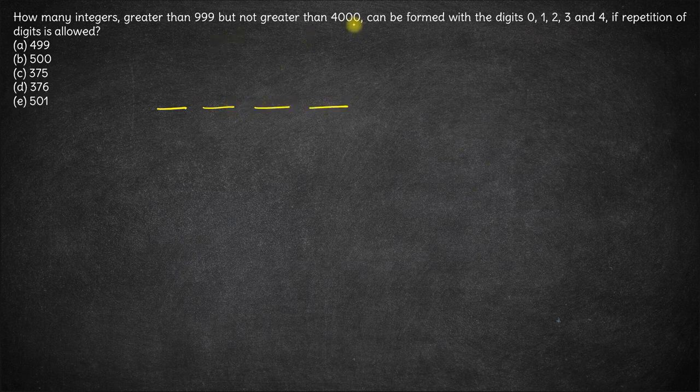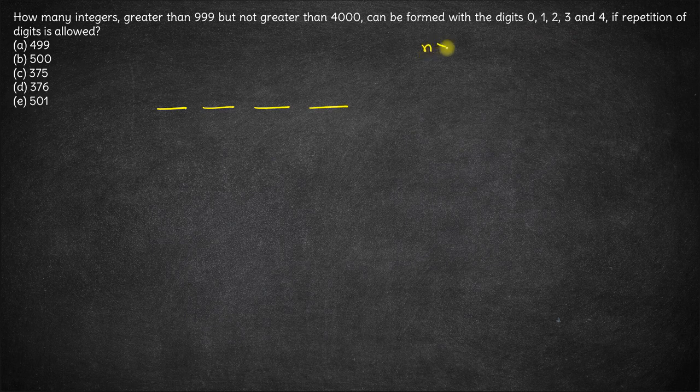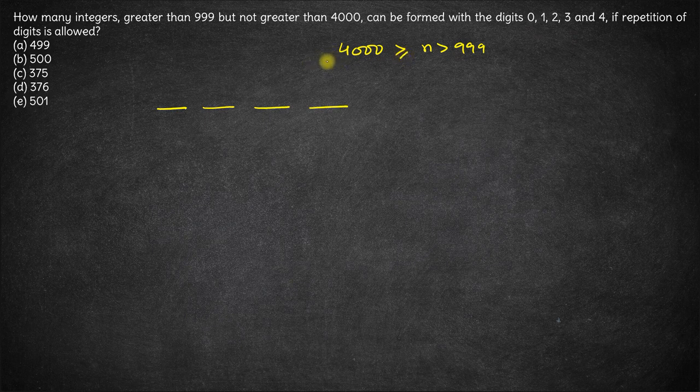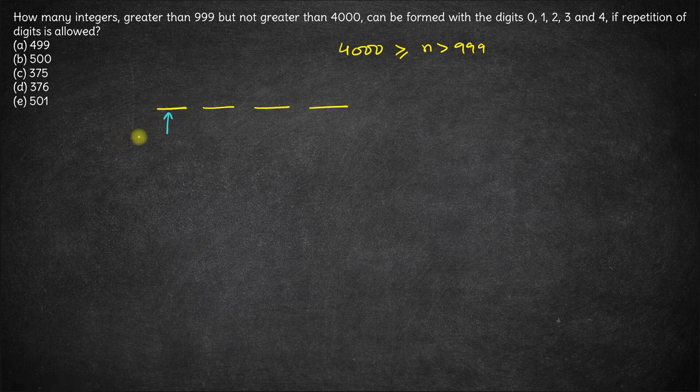Greater than triple nine but less than or equal to 4000. The number should be greater than triple nine but less than or equal to 4000. So let's start from here, the thousands digit.